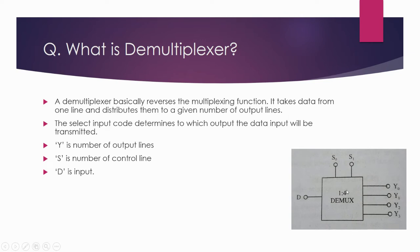Demultiplexers are available in the range of 1-to-2, 1-to-4, 1-to-8, 1-to-16 — they are available in powers of 2. This 1-to-4 means 1 is representing the only one input and 4 is representing 4 outputs. If it is 1-to-2, it will have only one input and two output lines.